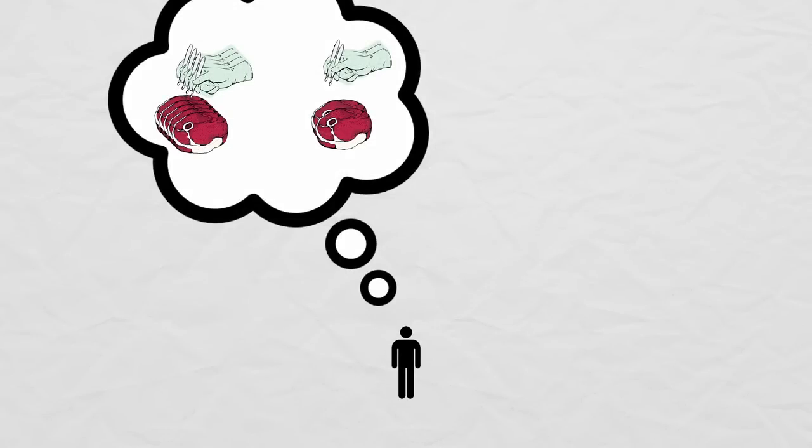Since Carl is a rational, utility-maximizing agent, he always does what will give him the highest utility given his constraints. So there we have it, we have a mathematical expression for Carl's behavior given his utility function and a constraint. Good job, Carl!